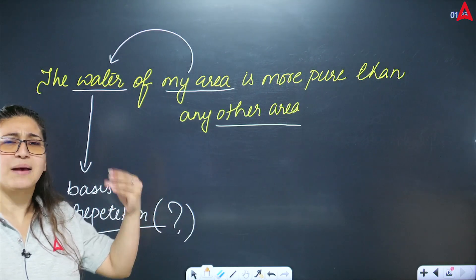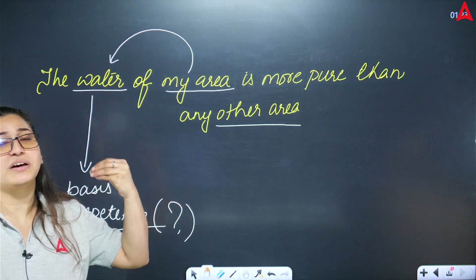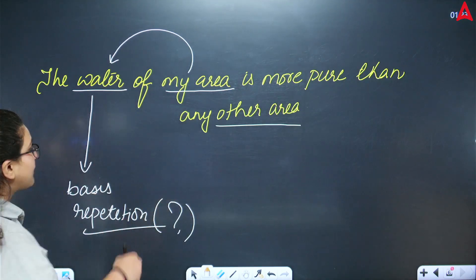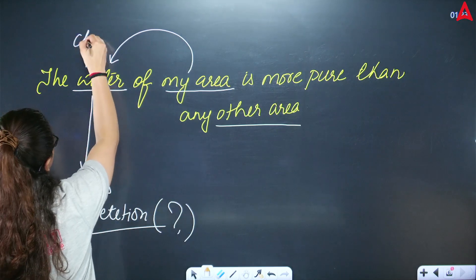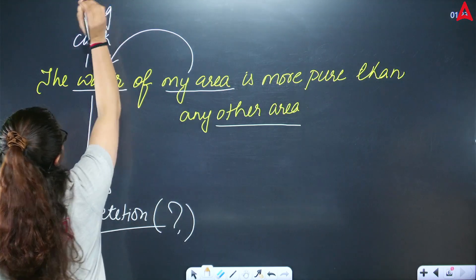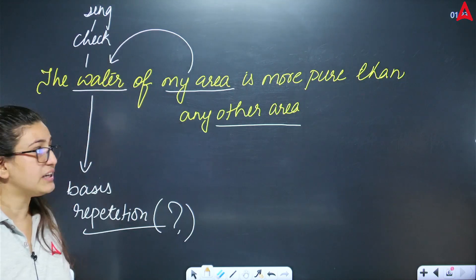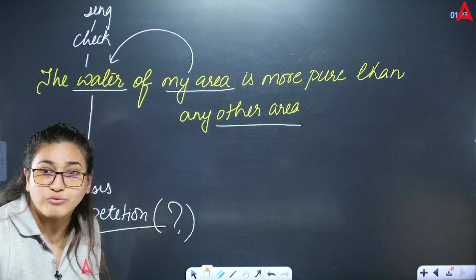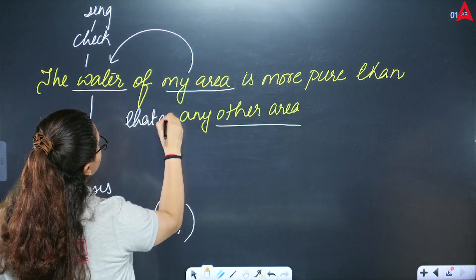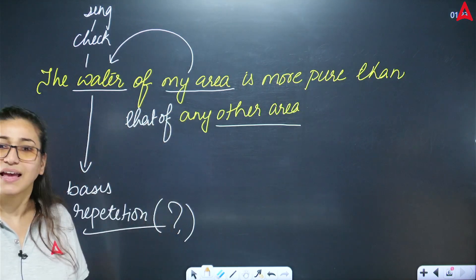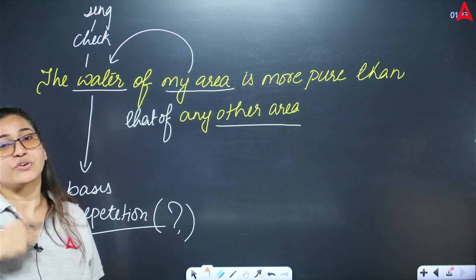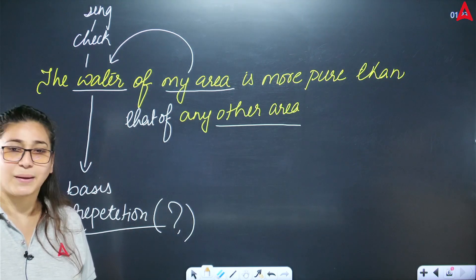Whether your basis is explicitly repeated or not in the sentence, you still need to do a replacement. When you check the basis, you find it is singular — 'water' is singular. So the replacement word is 'that.' The corrected sentence becomes: 'The water of my area is more pure than that of any other area.' Clear!